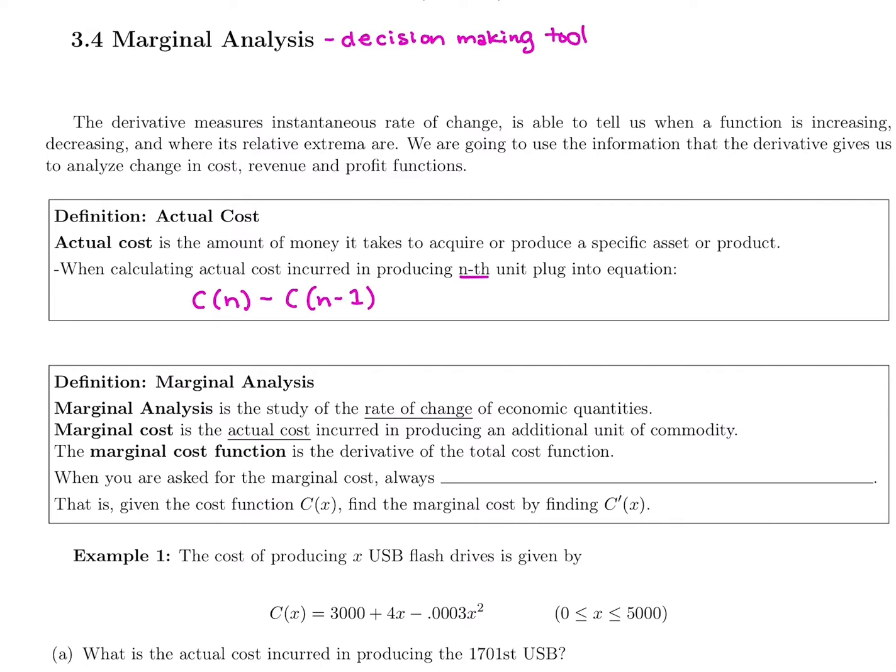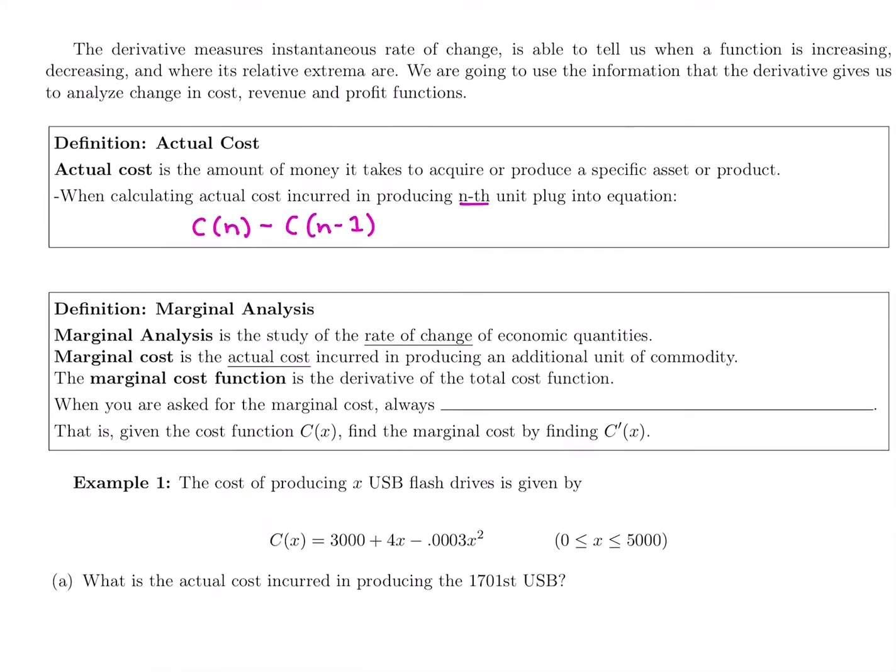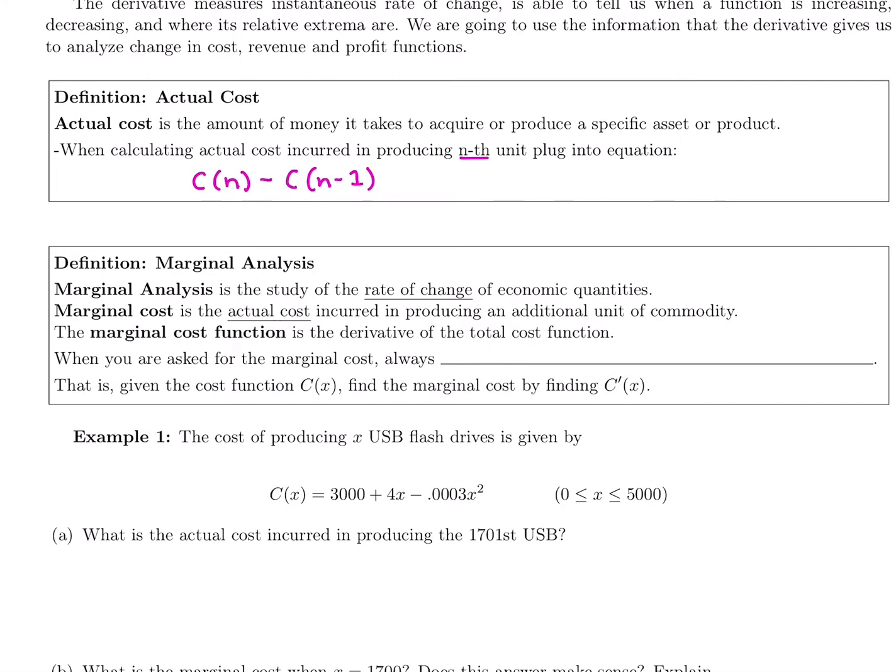So the formula is C(n), the number you want to know, minus C(n-1). Get the total cost for all n and then subtract the total cost for the number before. That will tell you the cost for just that nth unit you're interested in.